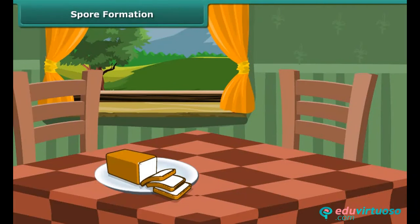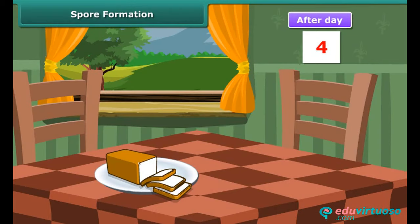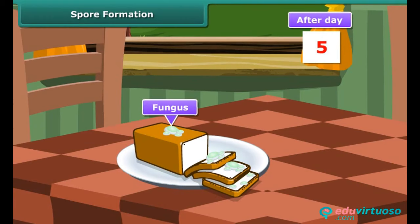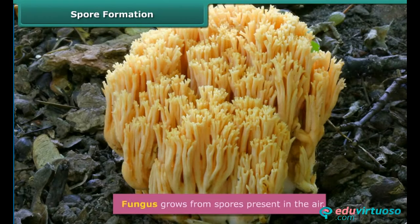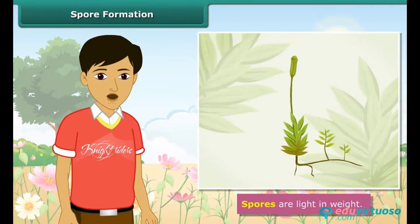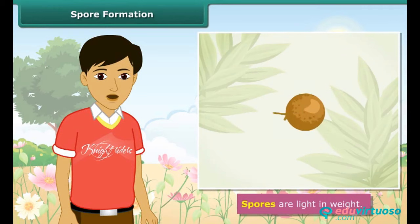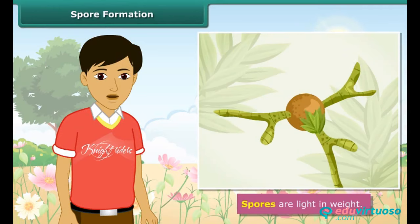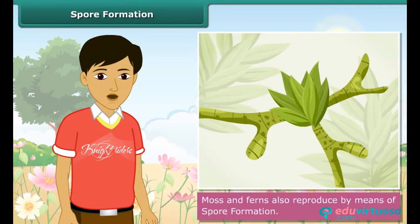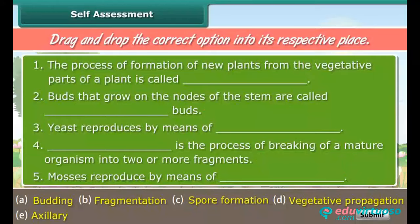Spore formation. What happens if we keep a piece of bread in warm conditions for a few days? We will notice blue-green fungus grown on it. Fungus grows from spores present in the air. Spores are light in weight, so they keep floating in the air. Under suitable conditions, they germinate and develop into new individuals. Plants such as moss and ferns also reproduce by means of spore formation.